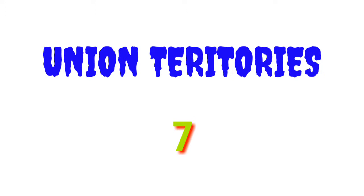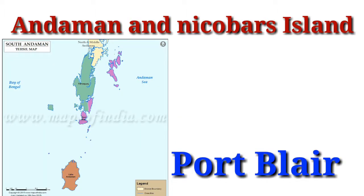Union Territories: there are seven union territories in India. The first one is Andaman and Nicobar Islands, headquarter: Port Blair.